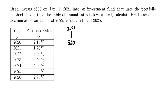We want to know how much is in his account at the beginning of the following four years: 2022, 2023, 2024, and 2025. So we'll mark all of those on this timeline. This last year will be 2025, and then we have 2022, 2023, and 2024 in between.